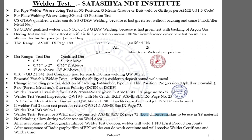For stainless steel welder tests, we must use a low chloride marker to mark the welder number or any identification on the pipe. The low chloride marker must be available at the welder test area. No grinding is allowed on the weld area during the welder test. If porosity is present, leave it as-is — it will be checked in radiography. If acceptable, it will be accepted; otherwise it will be rejected.